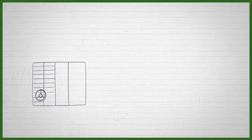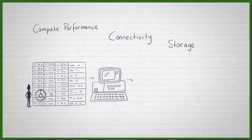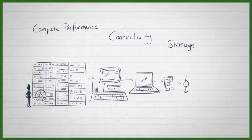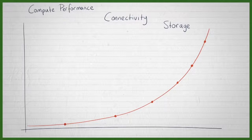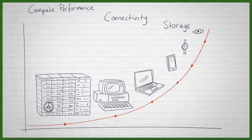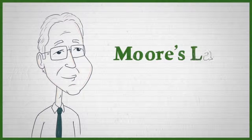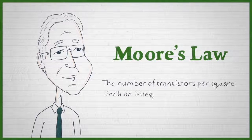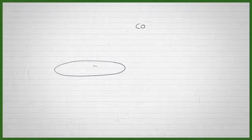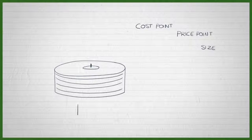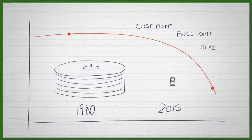The reality of technology, compute performance, connectivity, storage, is that those technologies don't live in a linear world. They live in an exponential world. Compute performance doubles every two years. It's famously called Moore's Law, one of the founders of Intel Corporation. And because compute and storage and connectivity behave like that, then the cost point, price point and size of compute connectivity that's available to us drops exponentially.